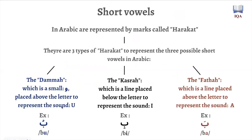Short vowels in the Arabic language are represented by marks called harakat. These marks are pretty much these types of accents — this little waw shape you see here, this little mark here, and this little mark here. All three of these are called harakat.